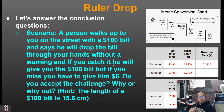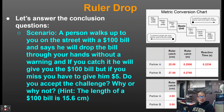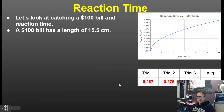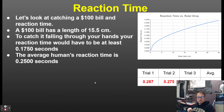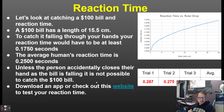A person walks up to you with a $100 bill and says he will drop it through your hands without warning — if you catch it, you keep it; if you miss, you give him $5. The length of a $100 bill is 15.5 centimeters. Based on the sample reaction time of 25 centimeters, you probably would not be able to catch it — to catch a 15.5 cm bill the reaction time would need to be at most 0.1750 seconds, but the average human reaction time is about a quarter of a second, so it's not possible.